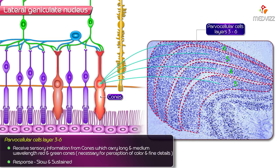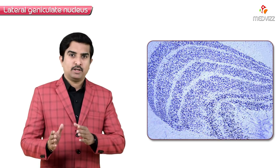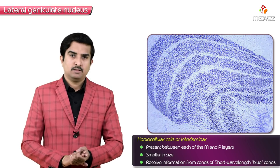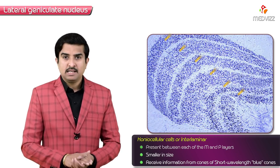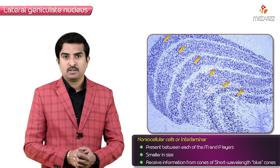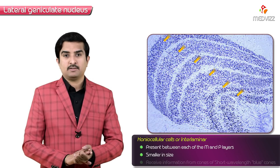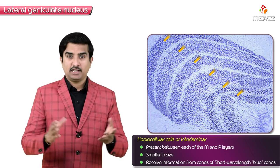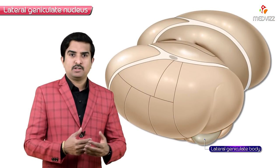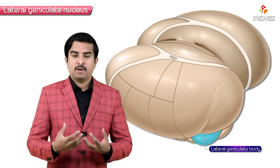The parvocellular layer responses are slow and sustained in nature. There are also other cells known as K cells, or koniocellular cells, also called interlaminar cells because they lie between the magnocellular and parvocellular layers. These cells are much smaller in size and receive information from cones of short wavelength, that is from blue cones.